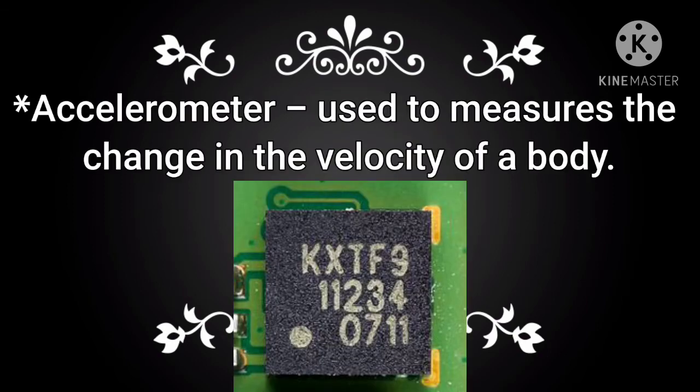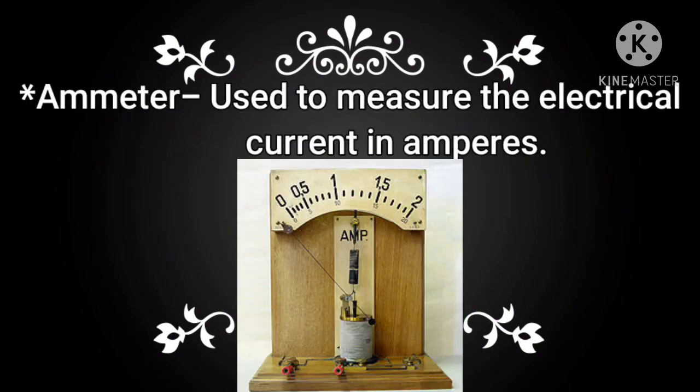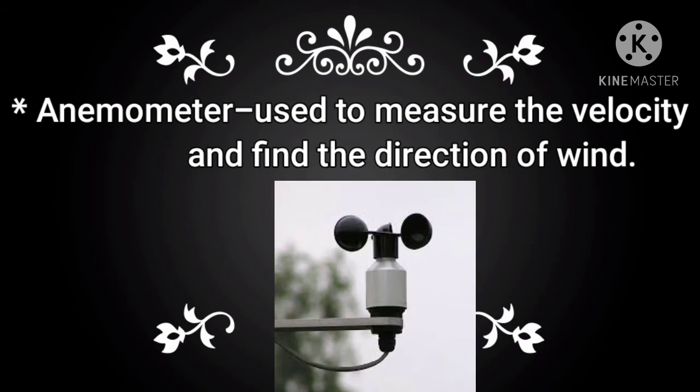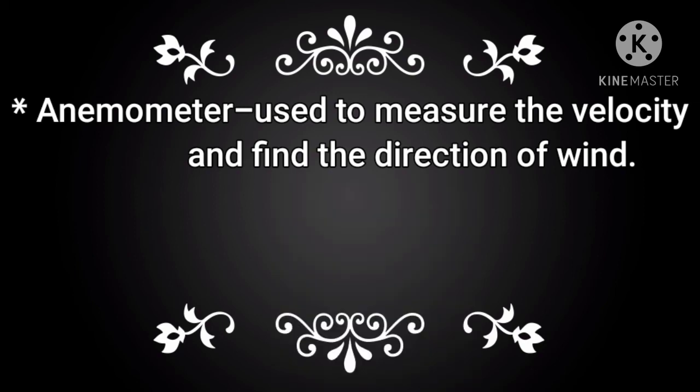Accelerometer: used to measure the change in the velocity of a body. Ammeter: used to measure the electrical current in amperes. Anemometer: used to measure the velocity and find the direction of wind.